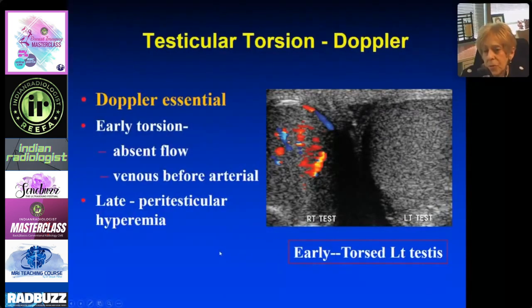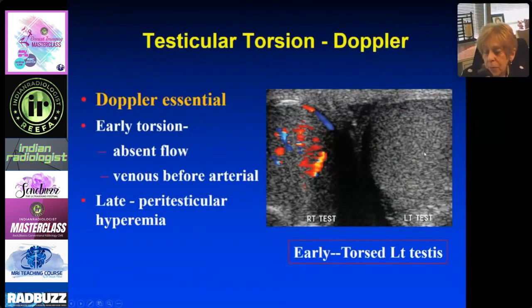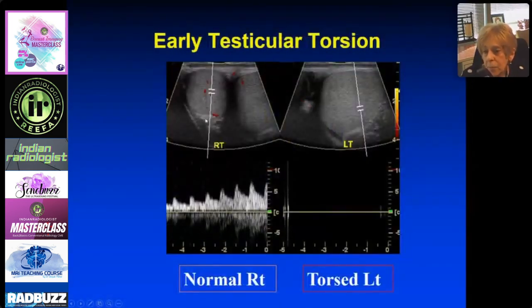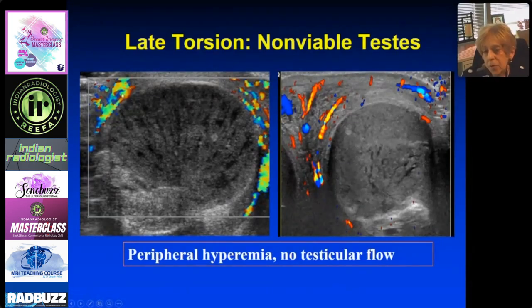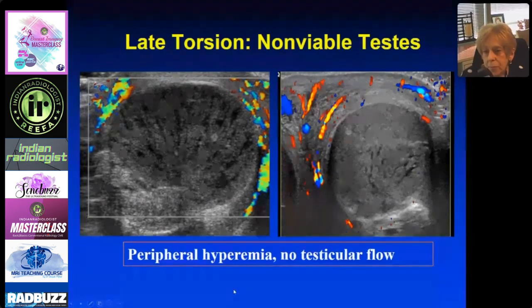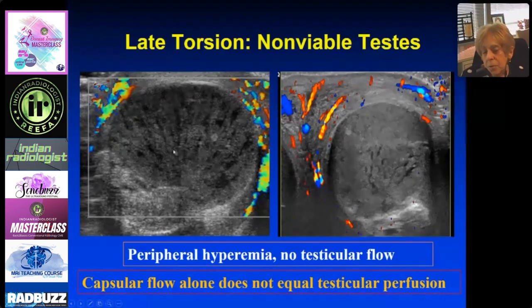Doppler is how you make the diagnosis — it's essential in early torsion when the testis looks normal. You can see absent flow: in a case with both testes looking normal on grayscale, absent flow on one side is early torsion. Venous flow disappears before arterial flow. In late torsion, you'll see a lot of flow in the soft tissues but nothing in the testis. With a large, heterogeneous testis, peripheral flow from cremasteric and deferential vessels does not equal testicular perfusion — you must document flow in the center of the testis.